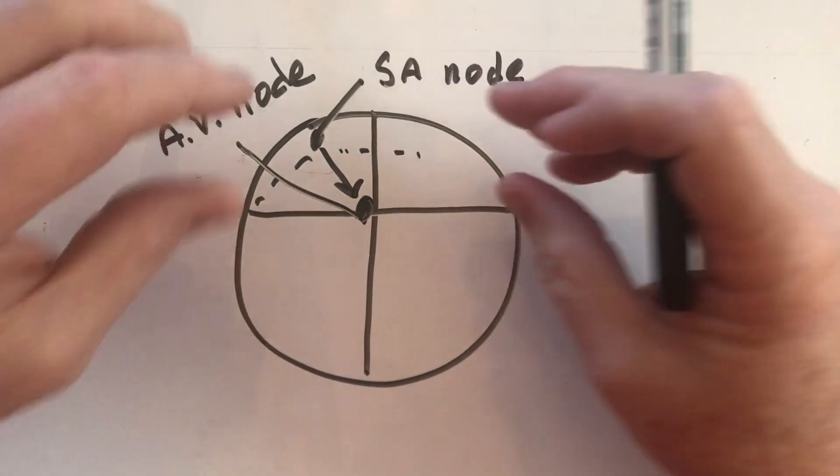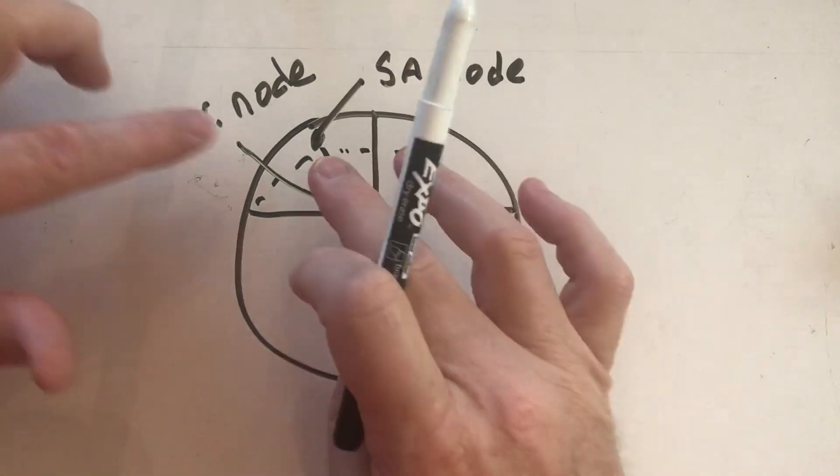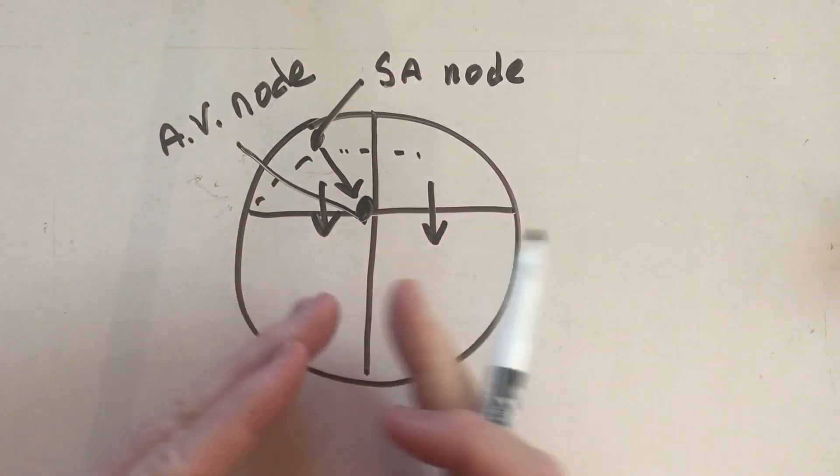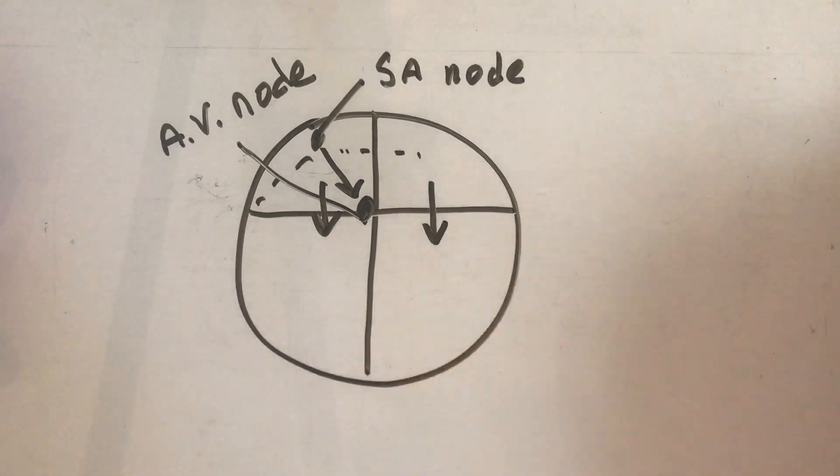So that way the atria could contract, and then after the atria contract, the blood went down to the ventricles and then the ventricles could contract. That's why the AV node would hold that up. So let's talk about what happens after it gets to the AV node.